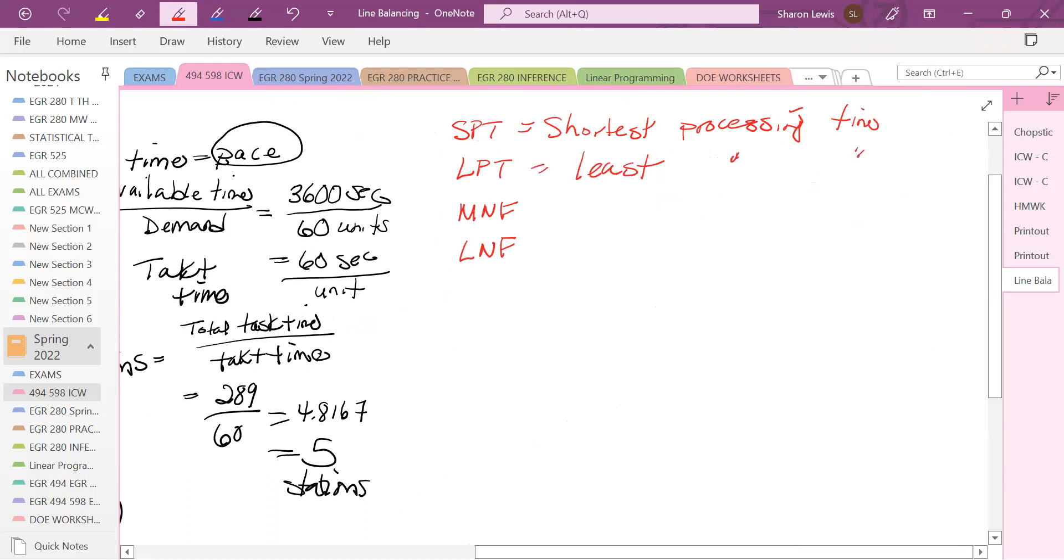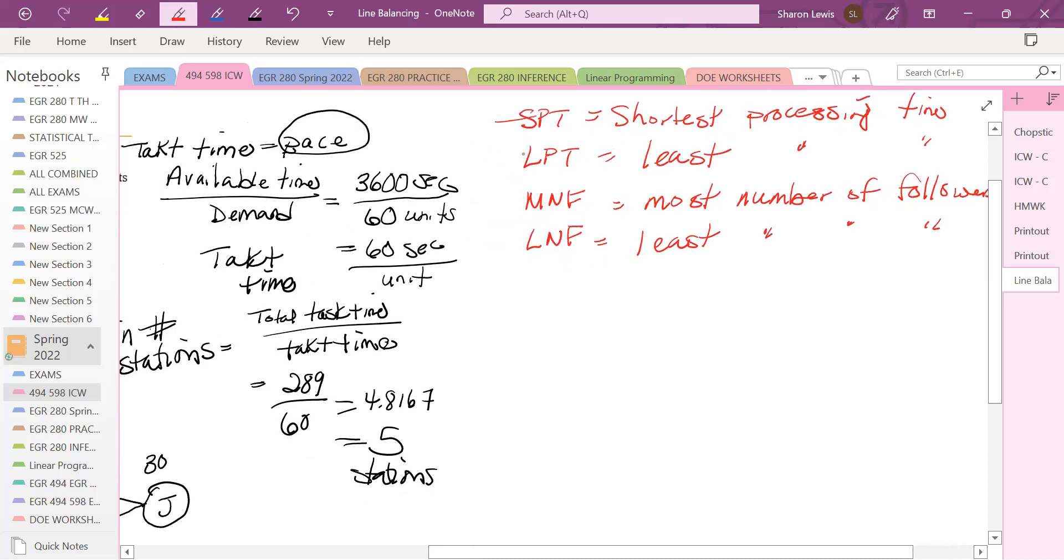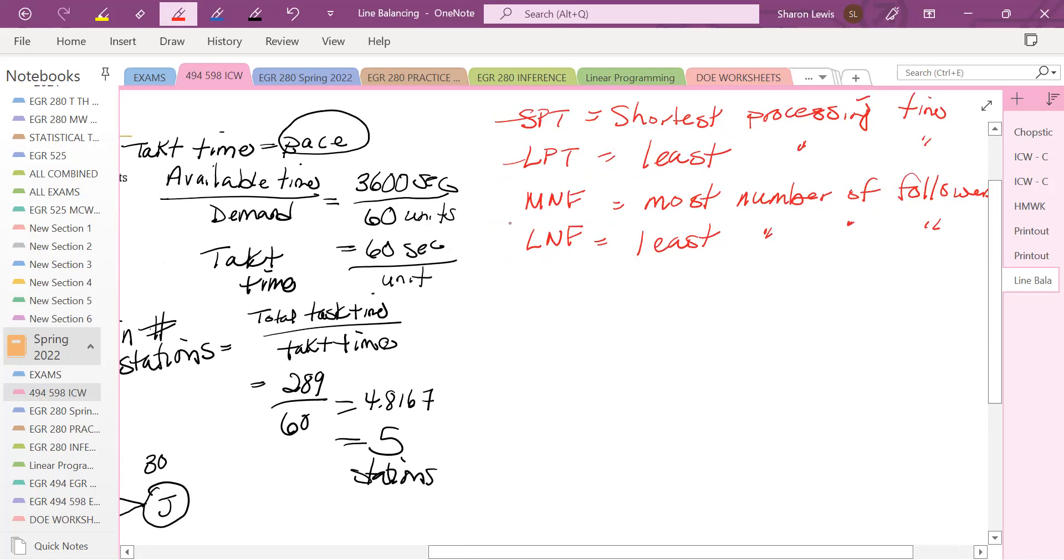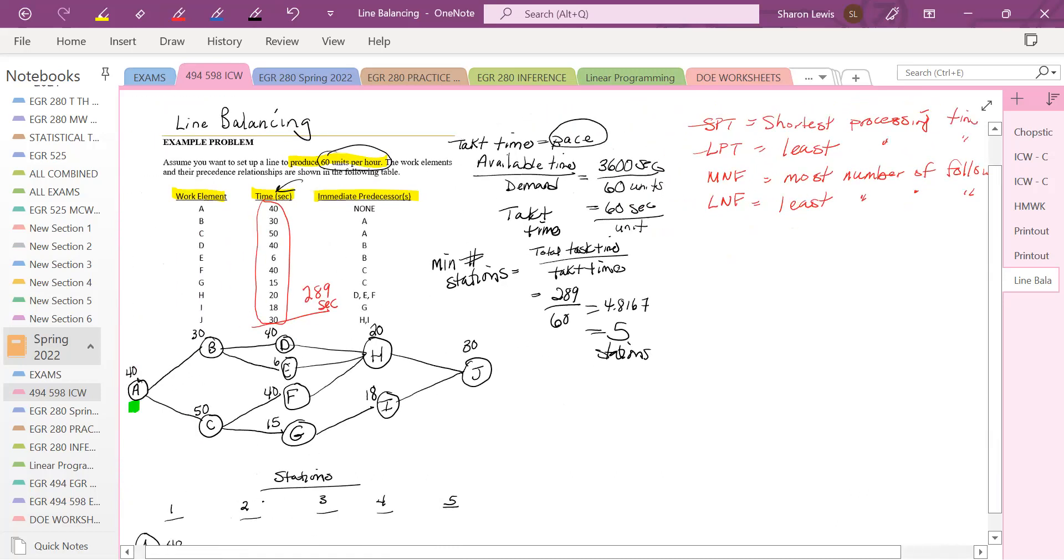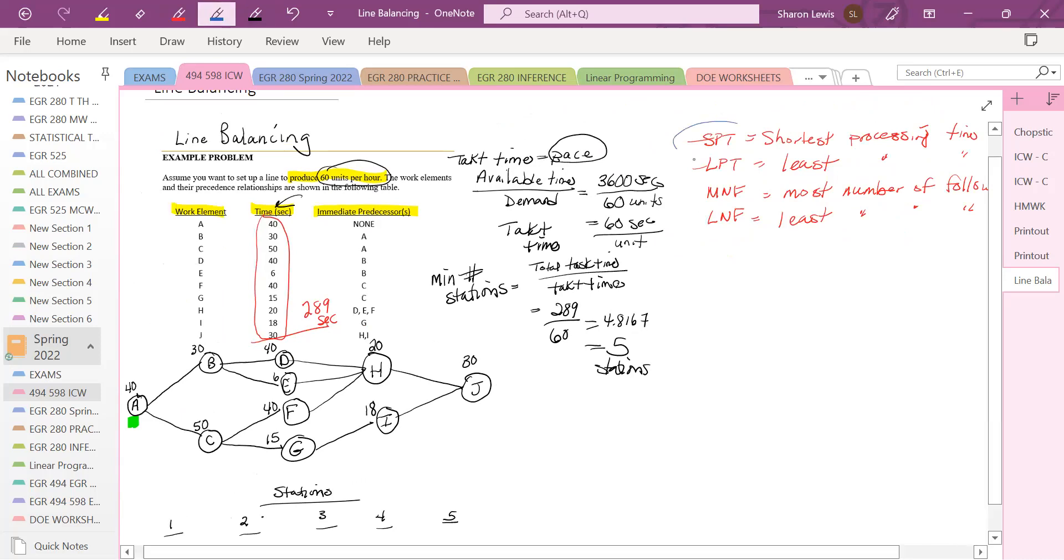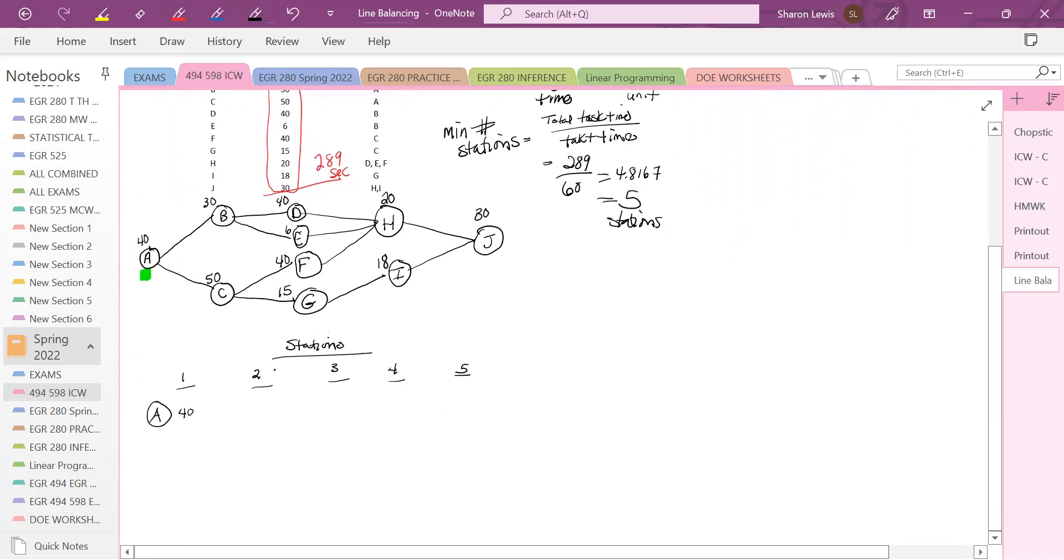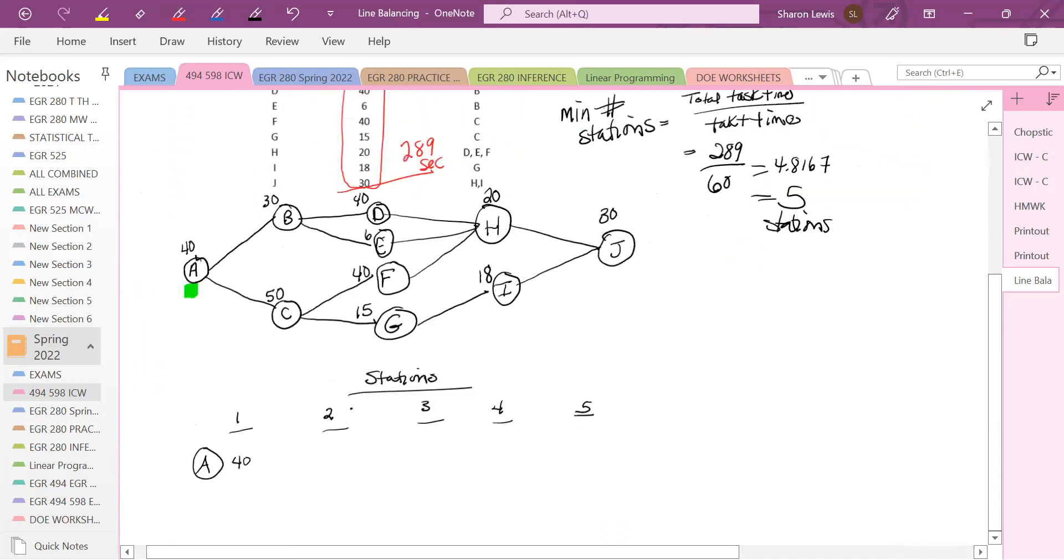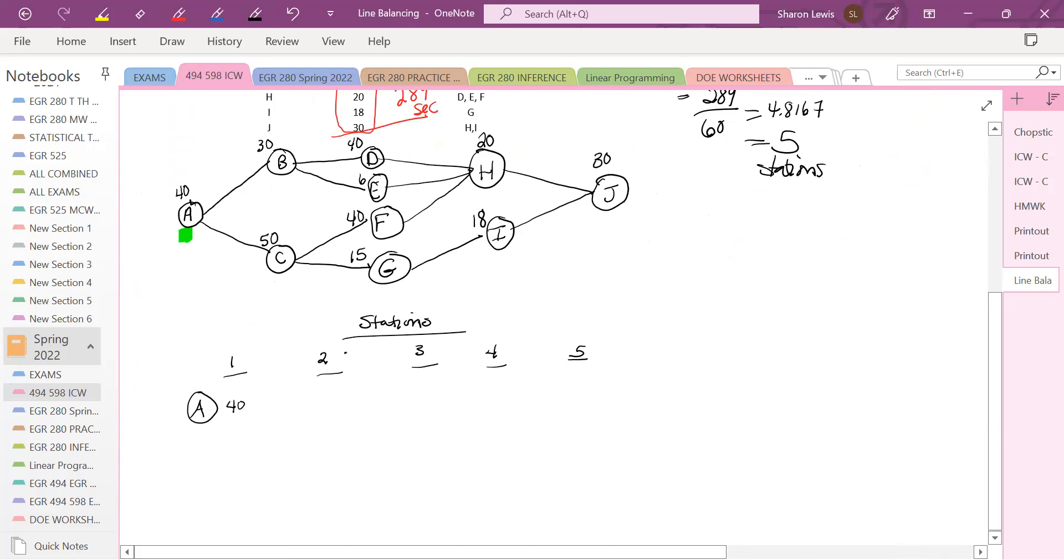But now what next? Now, what should I put next? I'm going to go and mark this as green as it's been assigned. Well, it turns out that we have some rules that are commonly followed in industry. So those rules are: shortest processing time, least processing time, most number of followers. We're going to do an example of this one and this one, and then I'll guide us into how those others work. But we're going to start off with shortest processing time.